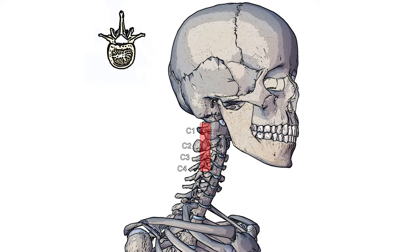The levator scapulae muscle is going to originate on the transverse processes of the cervical spine, specifically C1, C2, C3 and C4. I've put a little picture in the top left here — this is a cross-sectional view of one of the cervical vertebrae, looking down essentially on it. The transverse process is this projection right here.